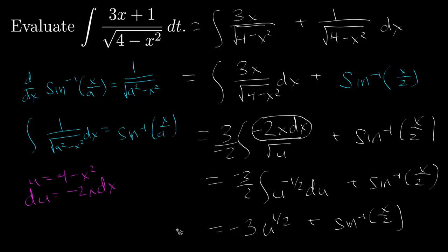So my final answer becomes negative 3 times the square root of 4 minus x squared plus arc sine of x over 2, plus an arbitrary constant c.